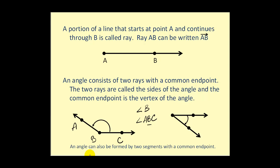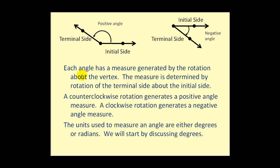Now it is true that an angle can also be formed by two segments with a common endpoint. Each angle has a measure generated by the rotation about the vertex. The measure is determined by the rotation of the terminal side about the initial side. So here's our initial side and the second ray, or the terminal side, has been rotated to this position.